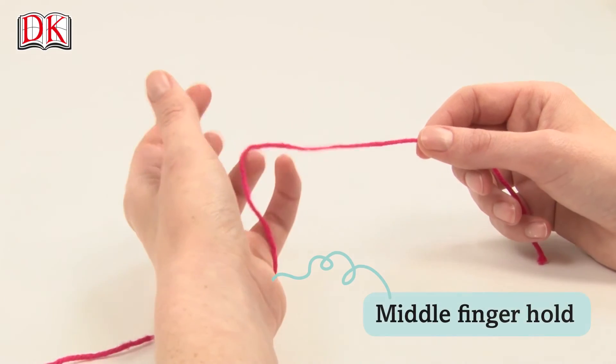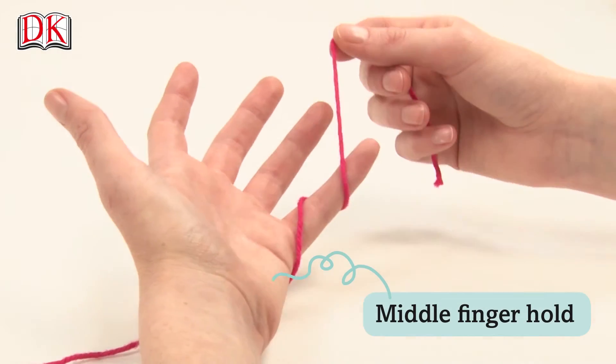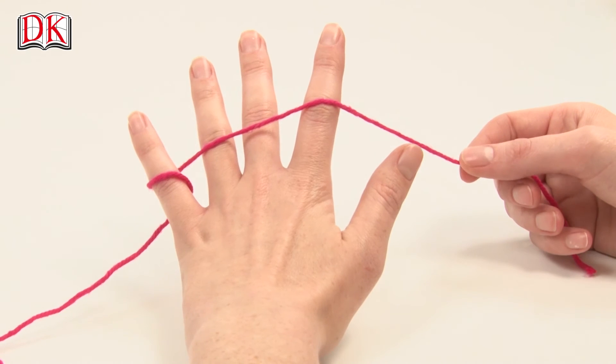Next is the middle finger hold. Pass the yarn around the little finger of your left hand and over all other fingers.